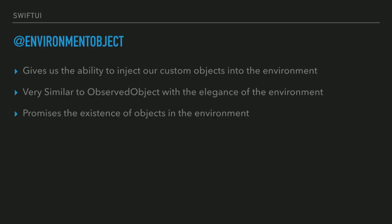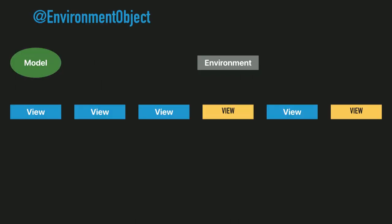The other way of listening to your custom observable object in SwiftUI is using the environment object — and here comes the elegance. Using environment objects lets you inject a custom observable object into the environment, which makes it available to all descendant views without having to pass it explicitly. Only the views that need it will request the data.